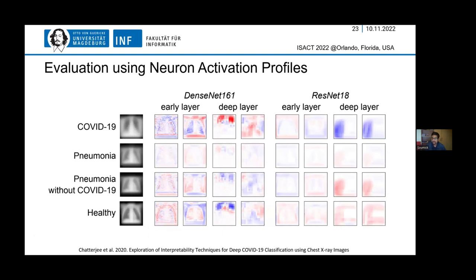We also did another experiment with neuron activation profiles — a global method that looks at the whole distribution of images, not individual ones. We see a similar story: with DenseNet, the early and deep layer results are not focusing on actual regions, either distorted across the whole image or focusing on boundaries. The deep layers are even worse — almost nothing to do with the lungs. With ResNet-18, we do see the focus is on the lungs, where the disease should be.